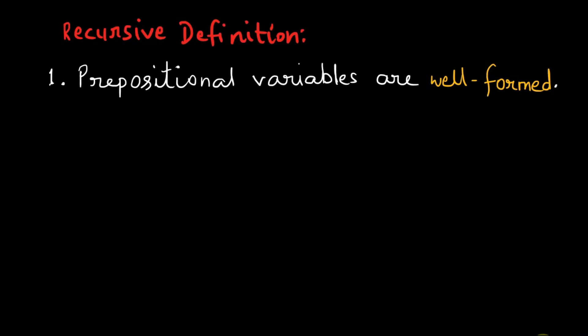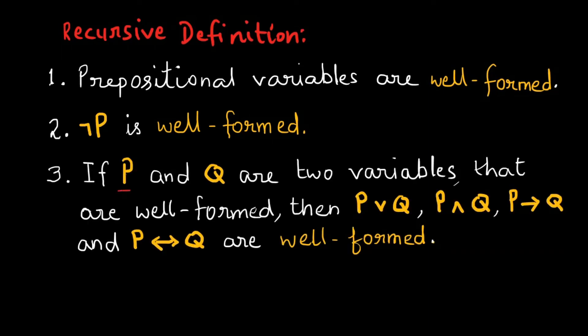Prepositional variables are by themselves well-formed. Suppose P is a simple propositional variable and a well-formed formula, then not P (the negation of P) is also well-formed. Rule number three: if P and Q are two variables that are well-formed, then P or Q, P and Q, P implies Q, and P if and only if Q are well-formed formulas.